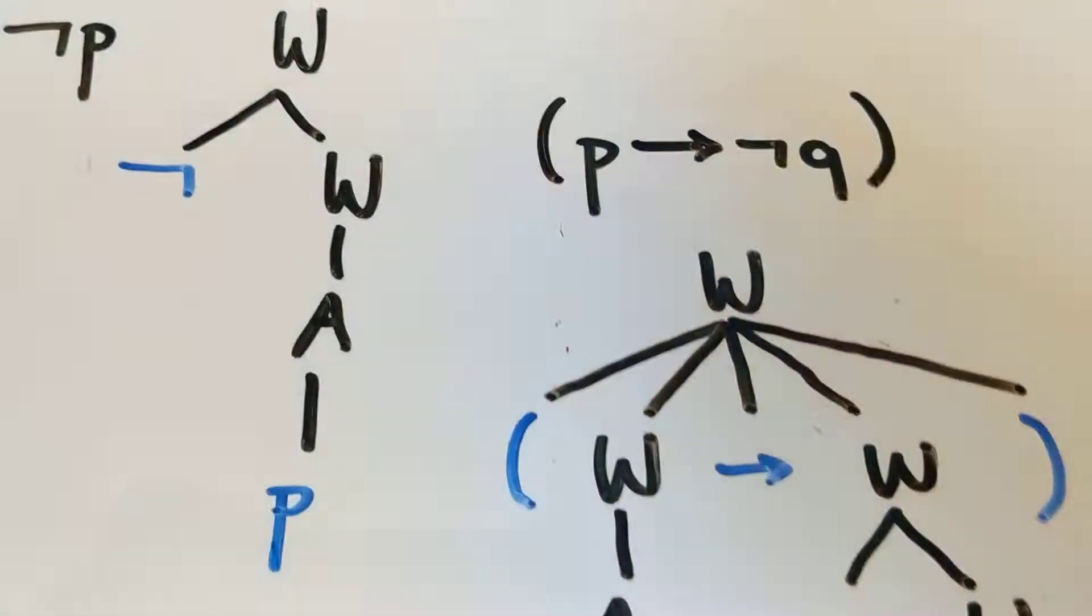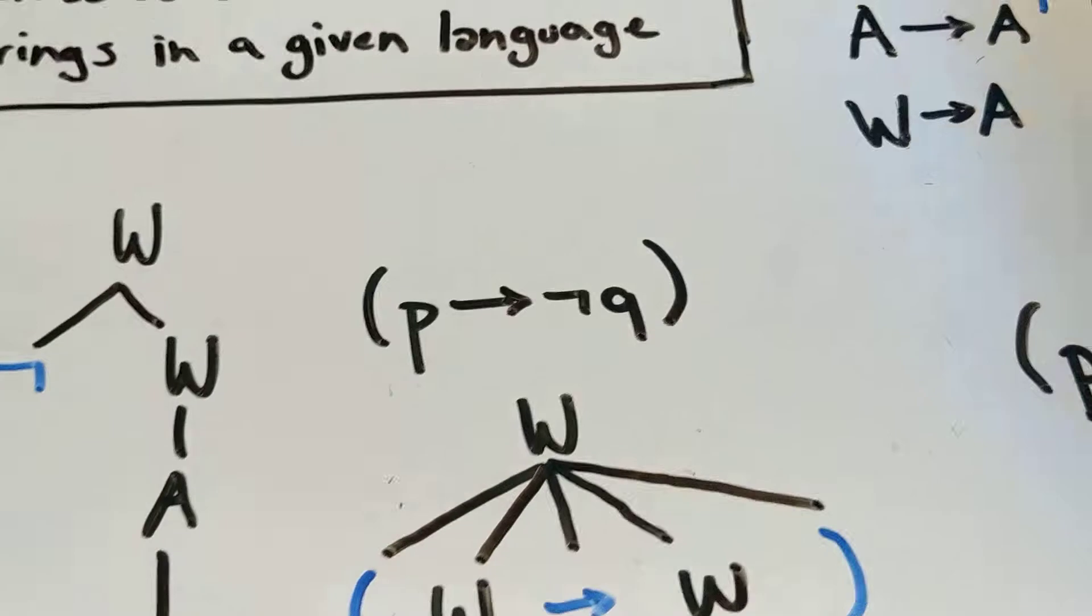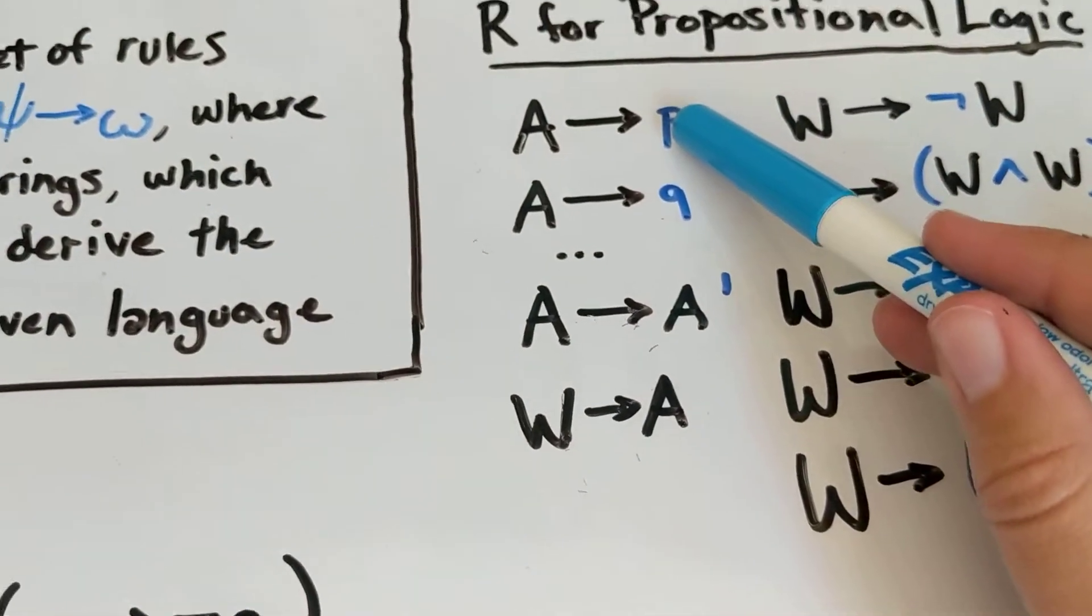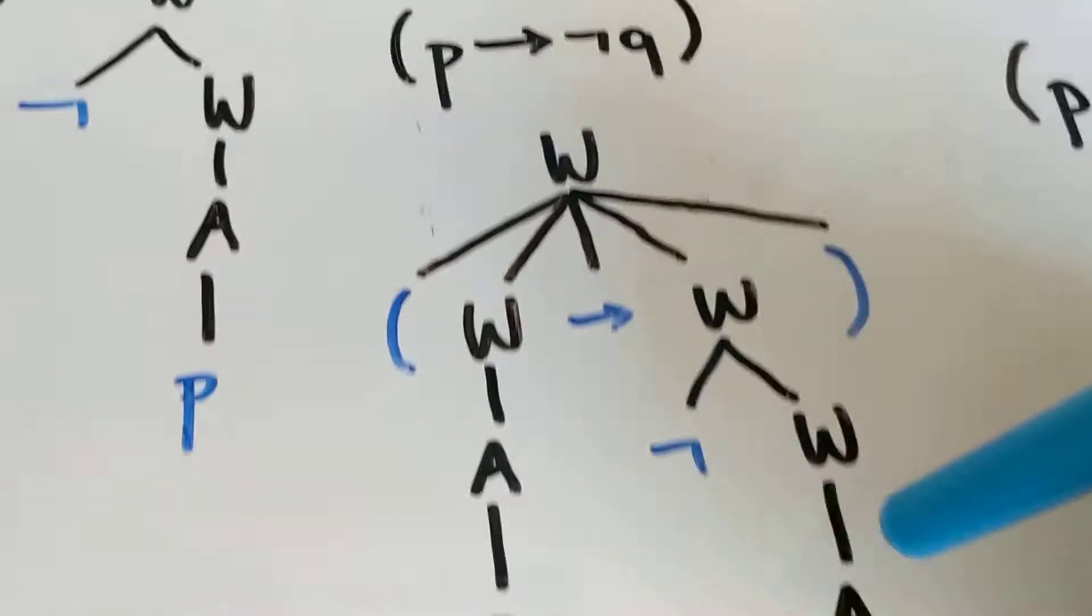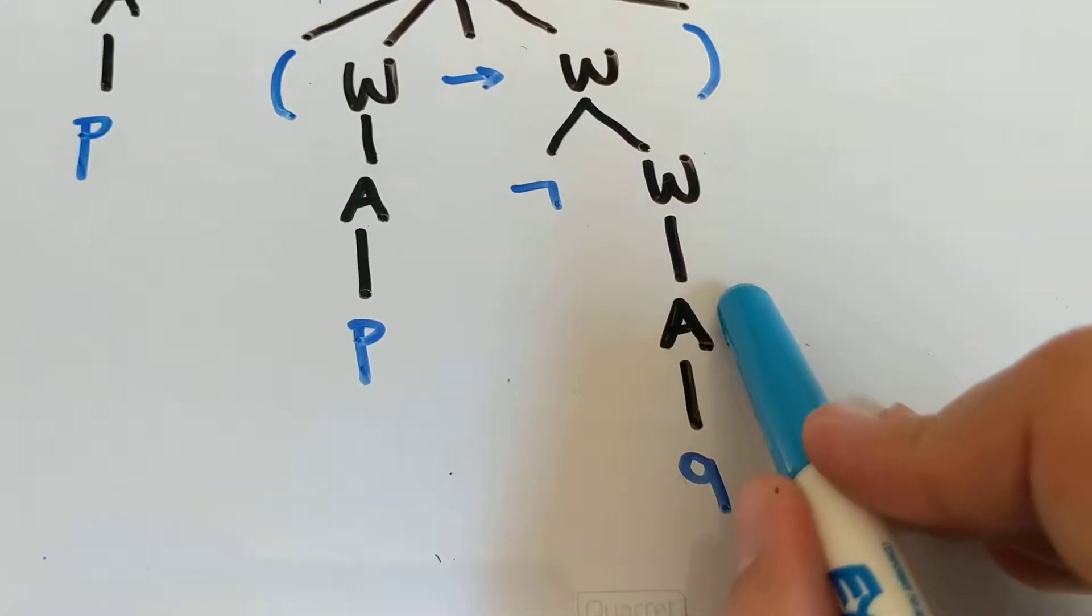Now let's do a slightly more complicated one. We have this expression P then not Q. P then not Q. We could start at the bottom and say, well, Q, we can build up into an atomic statement. That's the word I've been looking for, atomic statement.